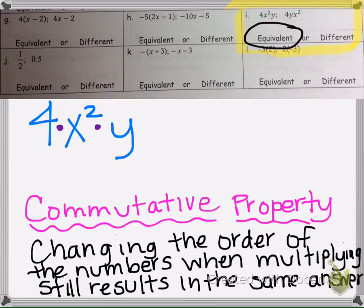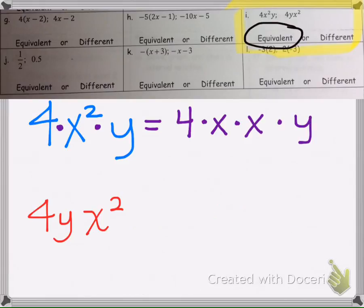So in this problem here, if I break this up, it looks like this. We have a 4, and then x squared looks like this, and then we have a y. In this problem we have a 4 next to a y, so that means multiply, and then we have x squared.